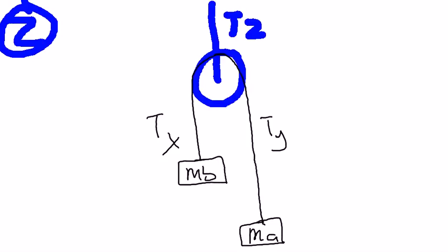Question 2 asks what is the relationship between Tx and Ty? Because the two masses are along the same rope, Tx and Ty are equal.